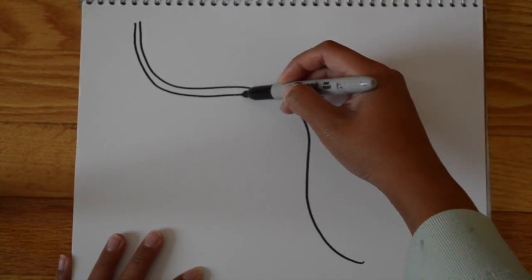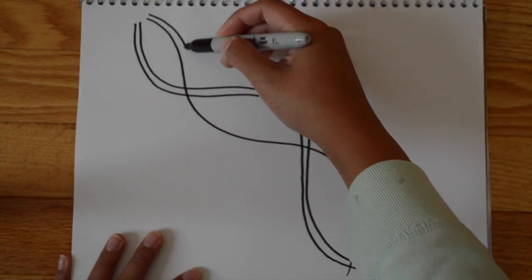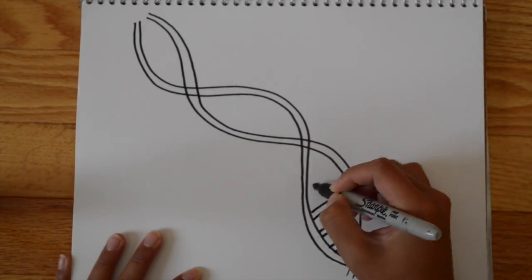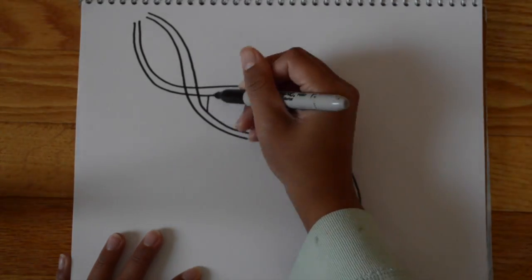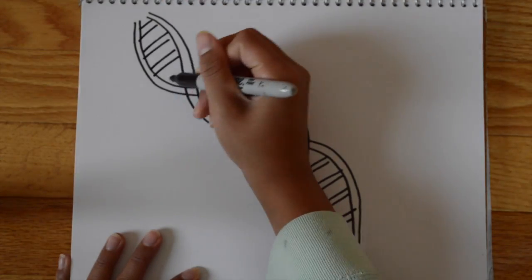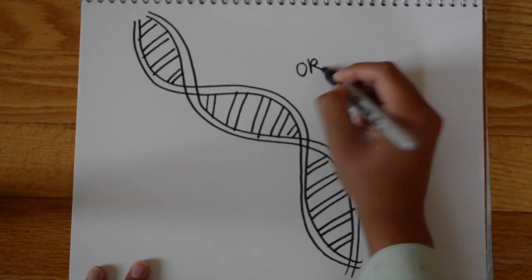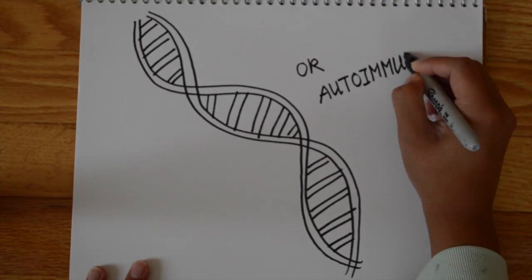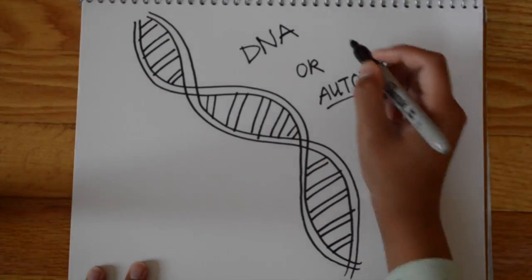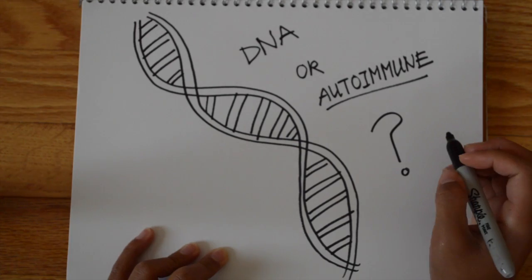So what causes vitiligo? As of now, it's unknown, but researchers are still trying to figure this out. Generally, it is thought to be an autoimmune disease, where the immune system may destroy the melanocytes in the skin. It is also possible that one or more genes may make a person more likely to get this disorder. Some researchers think that the melanocytes destroy themselves, while others think that a single event, such as a sunburn or emotional distress, can cause vitiligo.